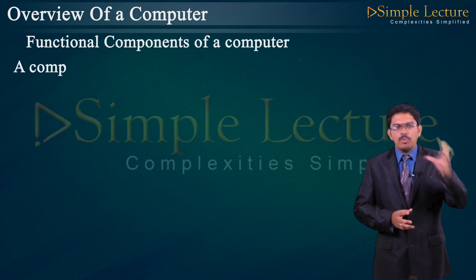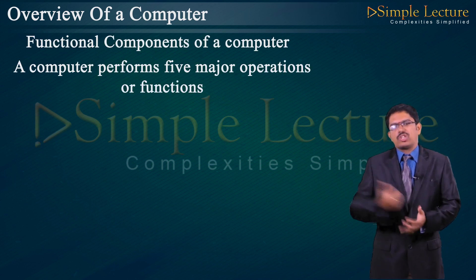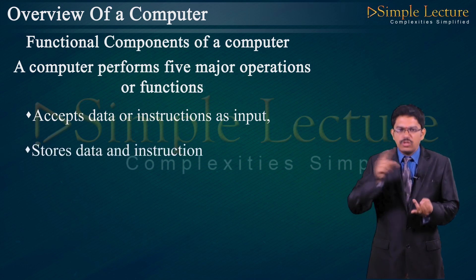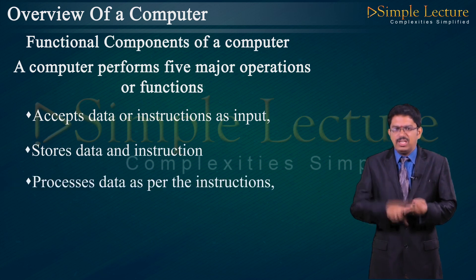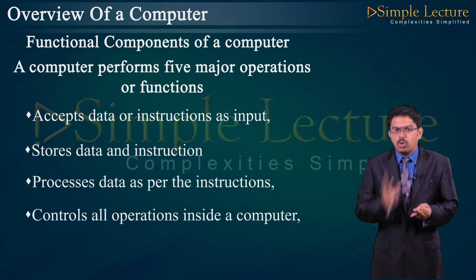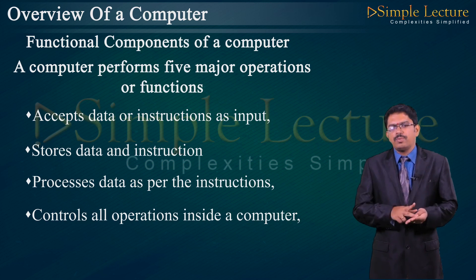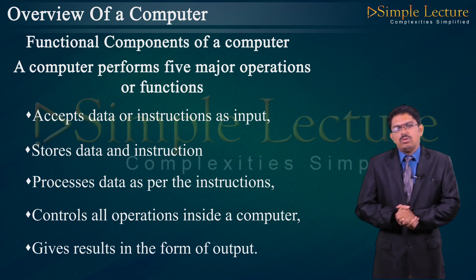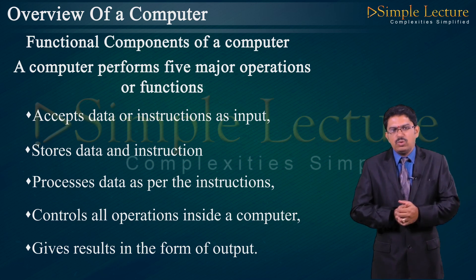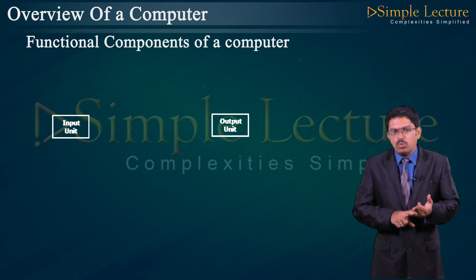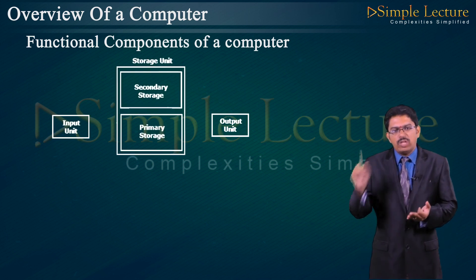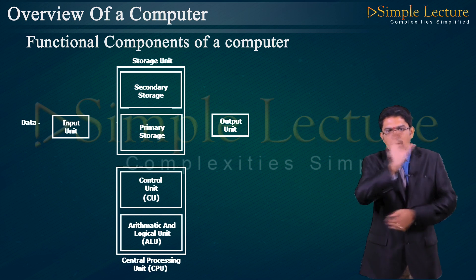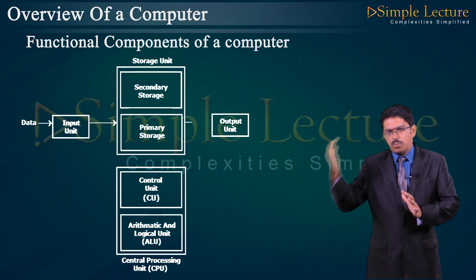A computer performs 5 major operations: accepts data or instructions as input, stores the data and instructions, processes the data as per the instructions, controls all operations inside the computer, and gives the result as output. There are 5 different units: input unit, output unit, storage unit, and central processing unit (CPU). The input unit receives data and the output unit displays results on the screen.